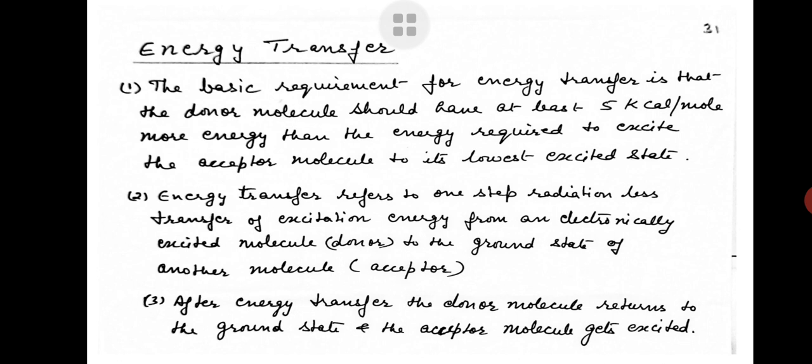Fortunately, a secondary mechanism for producing the triplet state is available, and that is photosensitization. This method involves the transfer of excitation energy from an electronically excited triplet state of a molecule to a ground state of another molecule — it is called the energy transfer mechanism. A molecule in an excited state S1 or T1 transfers its excess energy to another molecule; this process is called photosensitization or energy transfer.